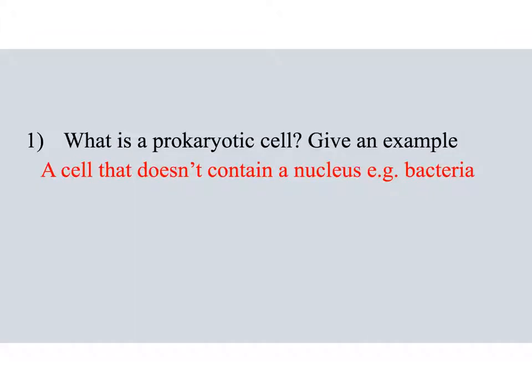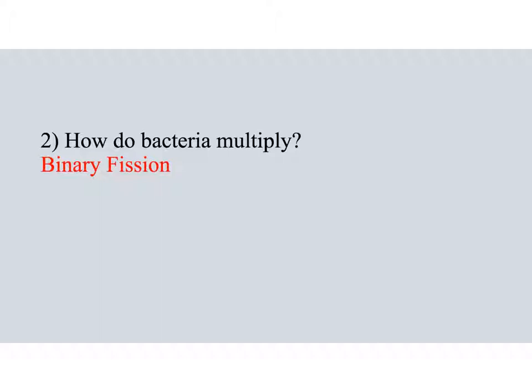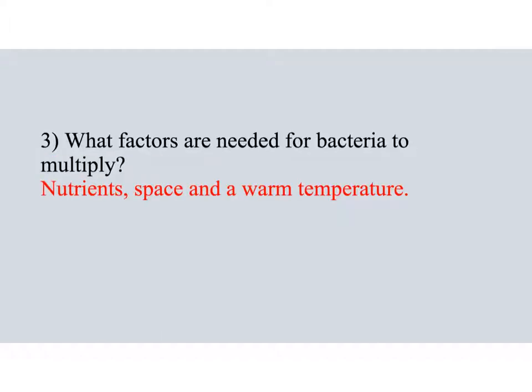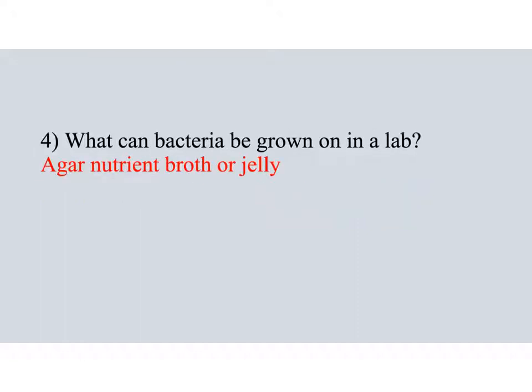Question one: A prokaryotic cell is a cell that doesn't contain a nucleus. You could also say it doesn't contain membrane-bound organelles. An example of a prokaryotic cell is a bacterium. Question two: Bacteria multiply by binary fission. Question three: Bacteria require nutrients, space, and a warm temperature. Question four: Bacteria can be grown on an agar nutrient broth or agar jelly.